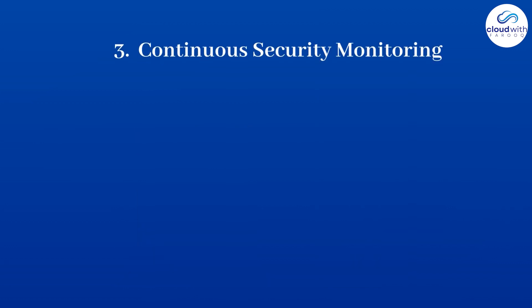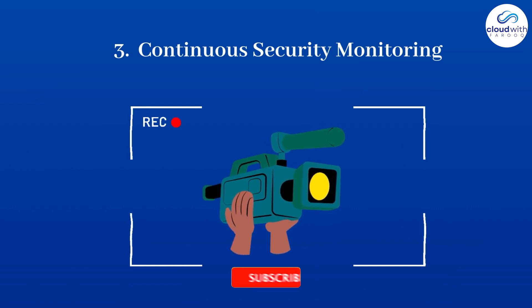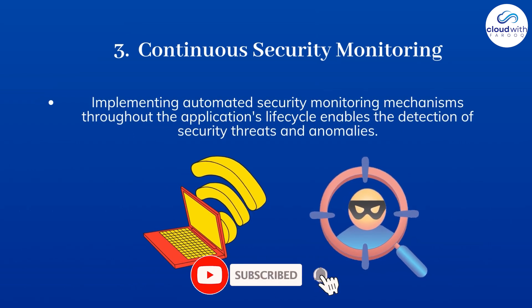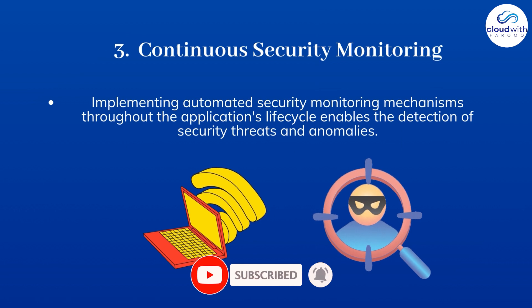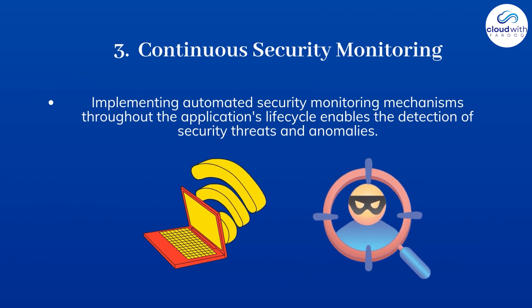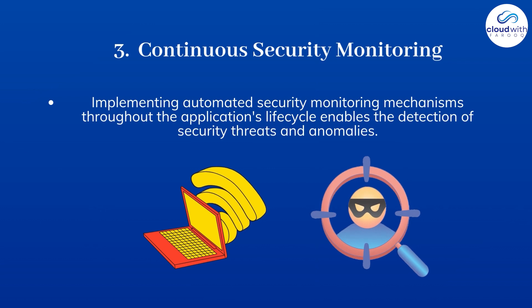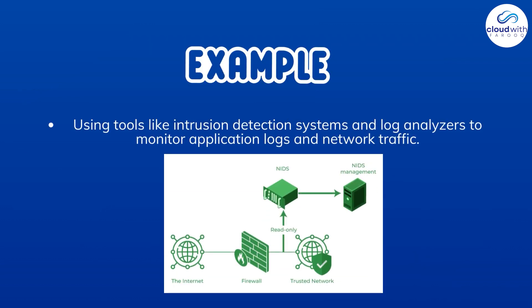Point 3: Continuous security monitoring. Implementing automated security monitoring mechanisms throughout the application's lifecycle enables the detection of security threats and anomalies. For instance, using tools like intrusion detection systems and log analyzers to monitor application logs and network traffic.